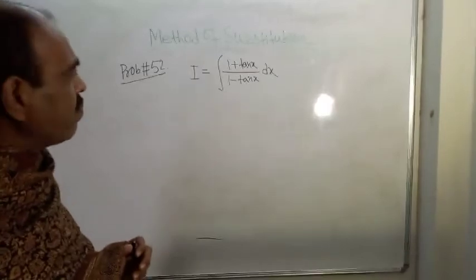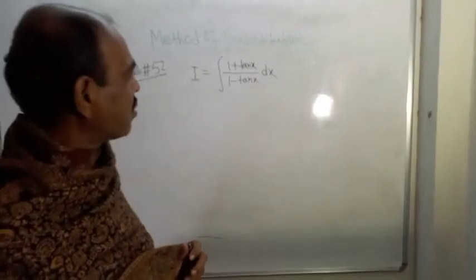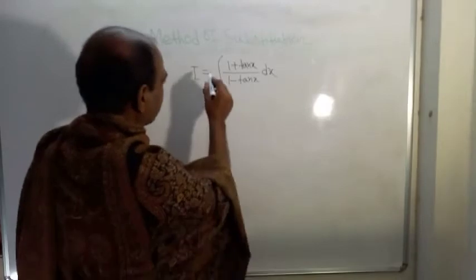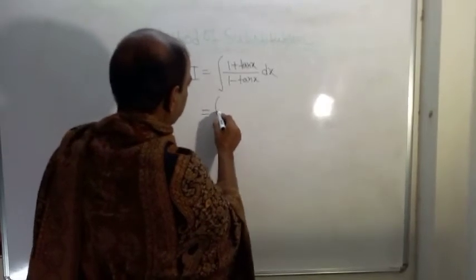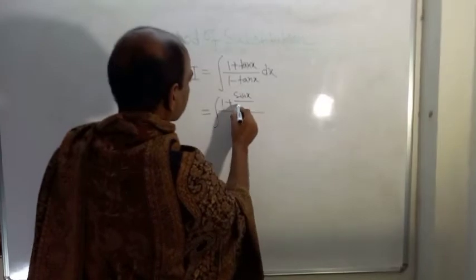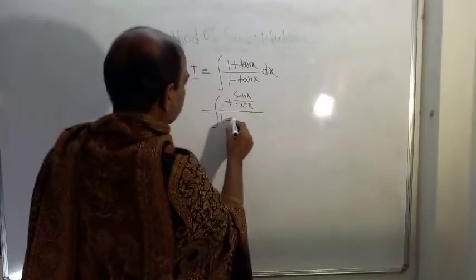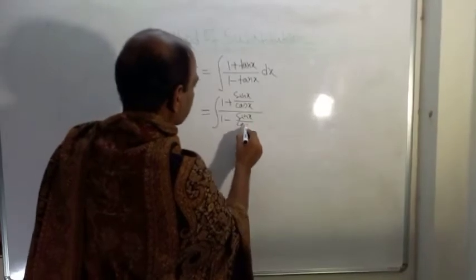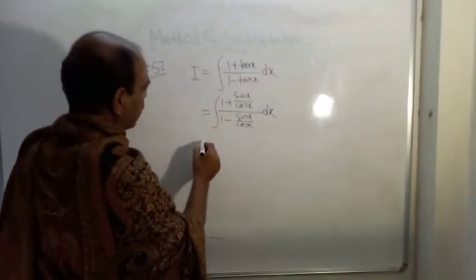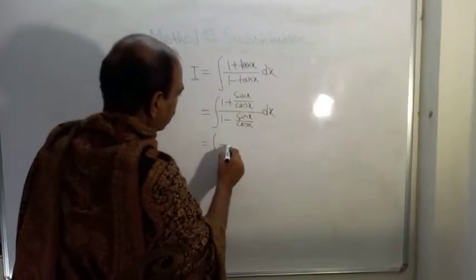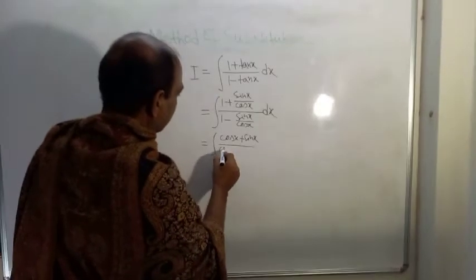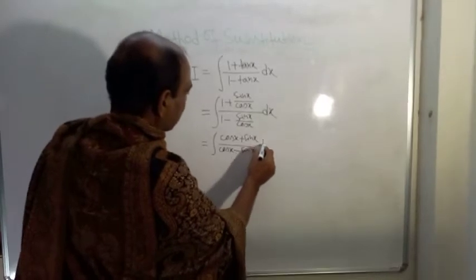To solve this problem, first multiply both the numerator and the denominator by cos x. We can write 1 + tan x as 1 + sin x over cos x, and 1 - tan x as 1 - sin x over cos x. Now multiply both numerator and denominator by cos x, giving us (cos x + sin x) over (cos x - sin x) dx.